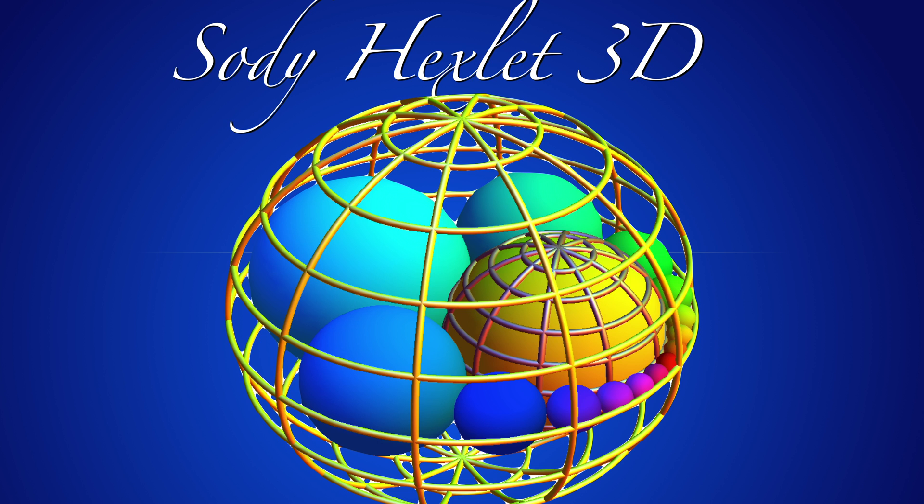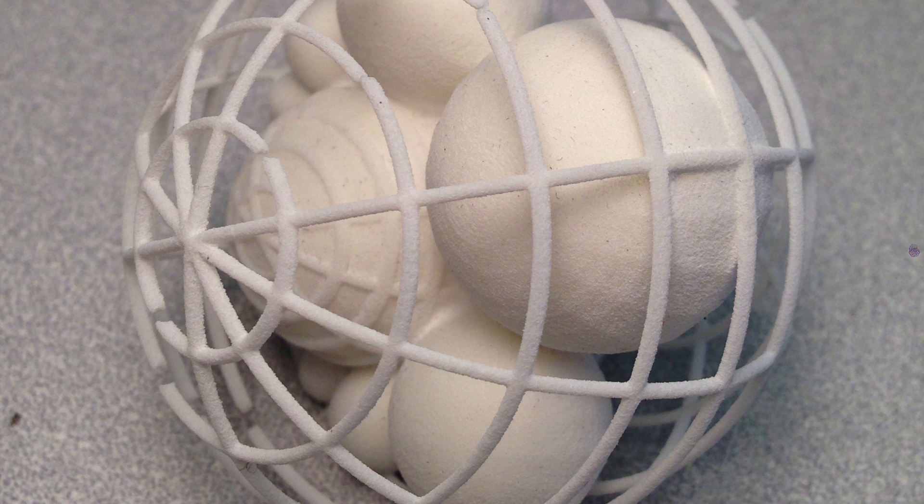Here's an example also done with Liz. It's a 3D version of the Soddy hexlet. One needs to know a little bit complex numbers to generate this nicely. Here's the printout with Liz in 2012. Also here it was a little bit too thin. You see some of the parts have broken.